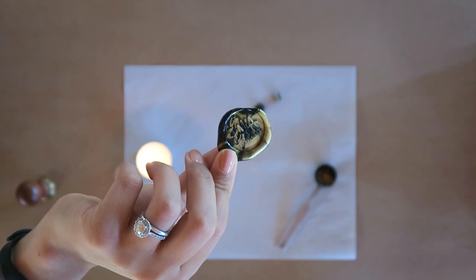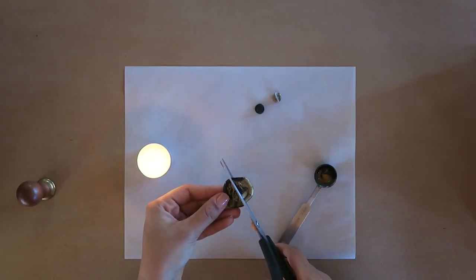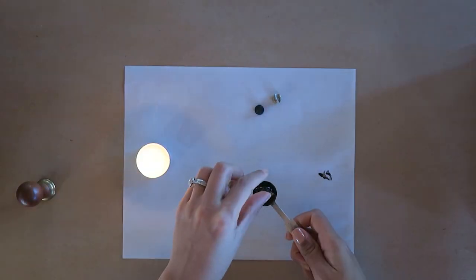If for some reason you don't like the shape of your wax seal, you can cut it up, put it back in the spoon, and try again.